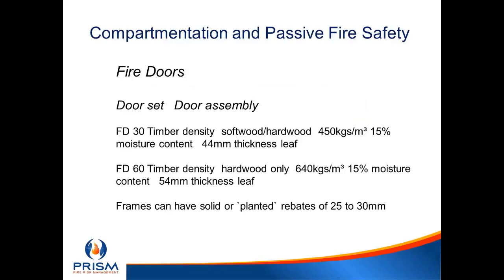The timber density and moisture content of softwood for an FD30 door must be to a certain standard. Only hardwood frames are allowed for 60-minute doors; softwood frames are allowed for 30-minute doors. Rebates must be 25 up to 30 millimetres. I often see someone who has put a fire door into a domestic frame with only a 12.5 millimetre rebate — it still has a 44 millimetre reveal, but the 12.5 millimetre rebate means it won't be effective for smoke stopping.